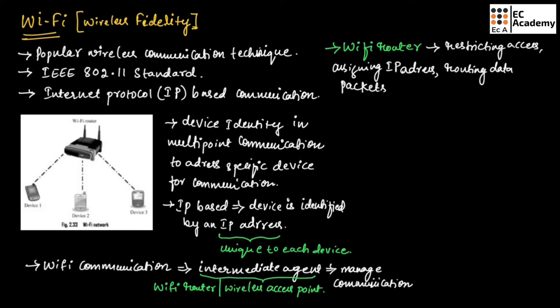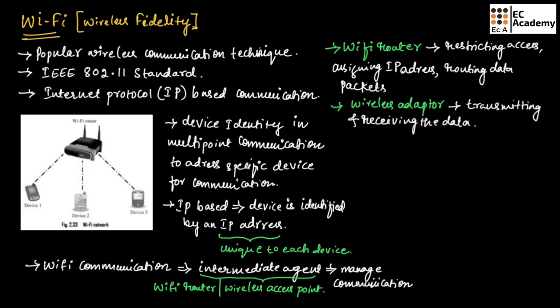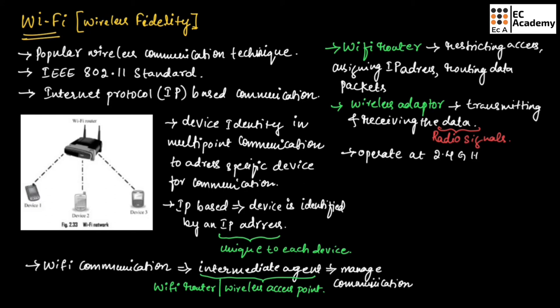Wi-Fi enabled devices contain a wireless adapter for transmitting and receiving data in the form of radio signals through an antenna. This data will be in the form of radio signals. Wi-Fi operates at 2.4 gigahertz or 5 gigahertz of radio spectrum. This figure shows the typical interface of a device in a Wi-Fi network.